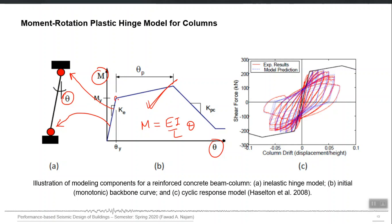You are responsible to calculate My, Mu, or the cracking moment if you want to include it. You must tell the program at what rotation the beam is going to collapse, and what stiffness it should follow during unloading and reloading from any given point. All this behavior — the backbone curve of M versus theta, and the cyclic behavior including the unloading and reloading rule — must be provided as input. If given accurately, the program will simulate damage and yielding in your beam more accurately.